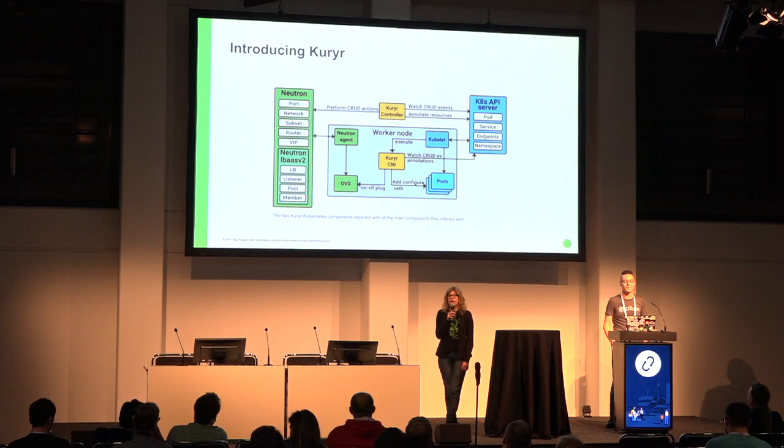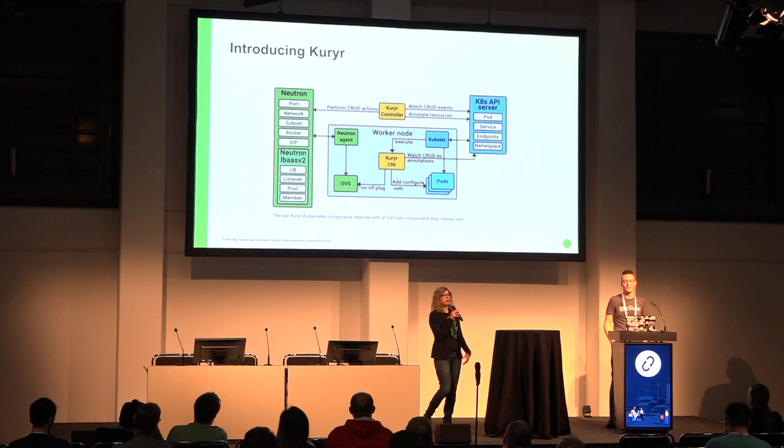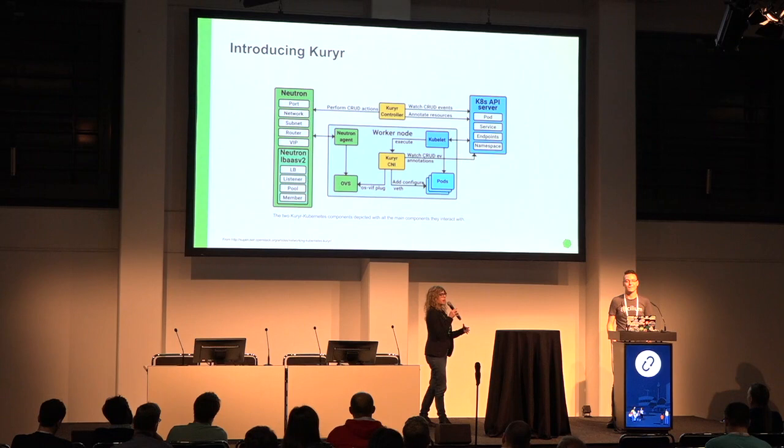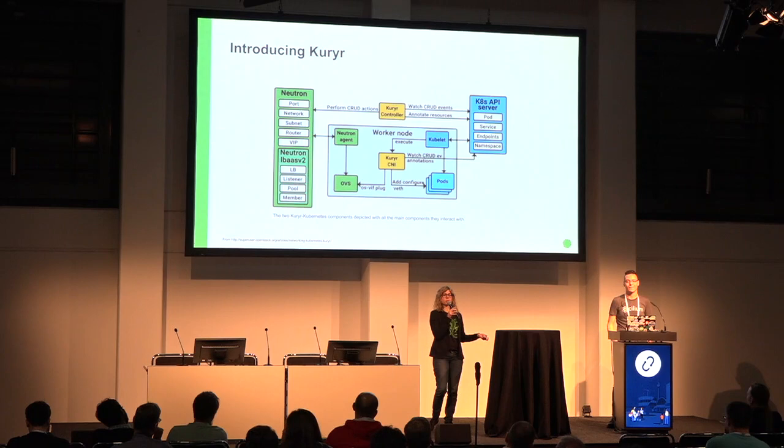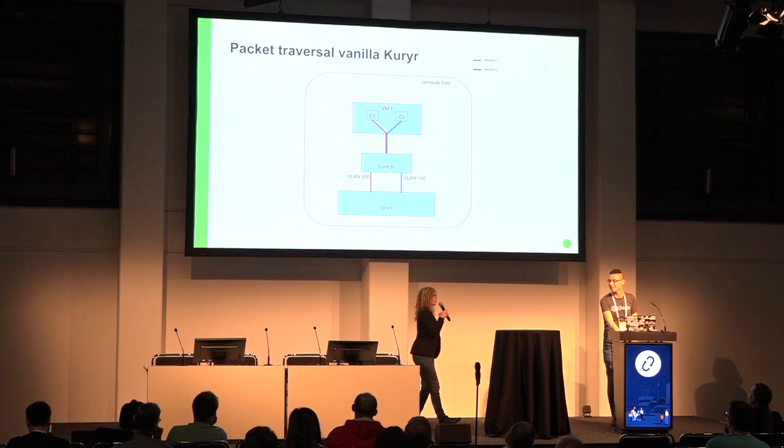The other drawback is that in Neutron we already use tunneling to take care of network isolation. And most container networking solutions are also using tunneling — like flannel, for example. So you ended up having double tunneling: the Neutron tunneling, and then inside that the tunneling by flannel. We'll see in the next slides how Kuryr avoids that.